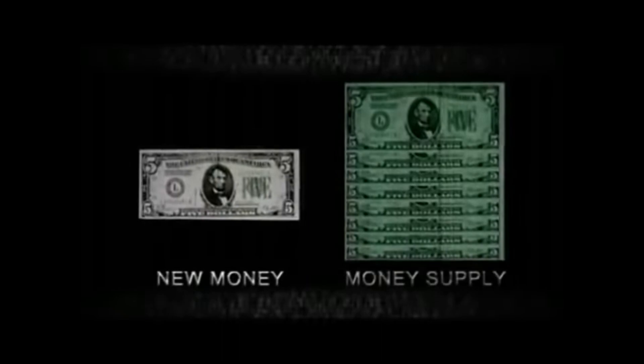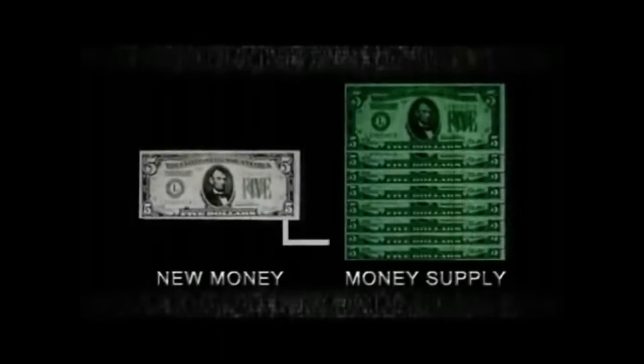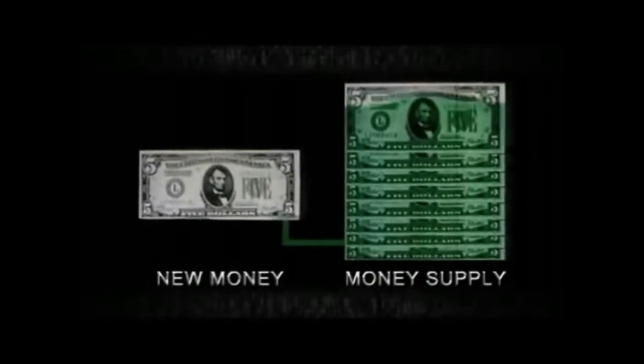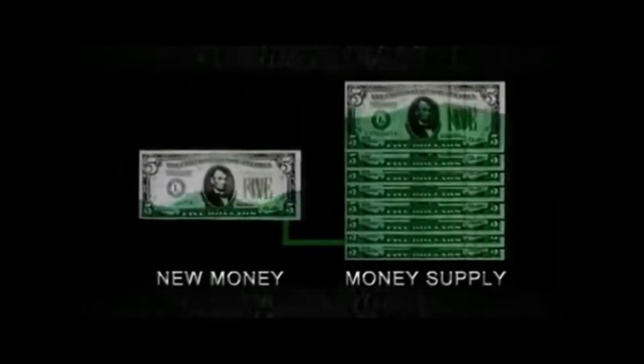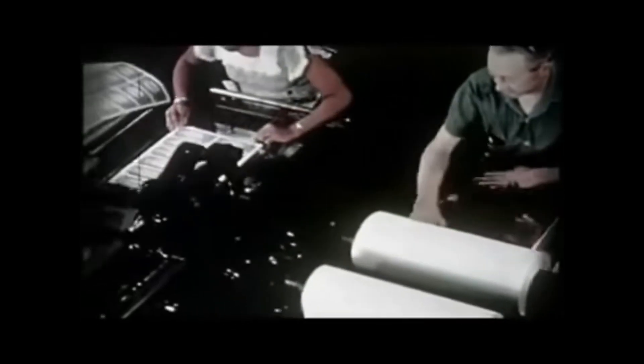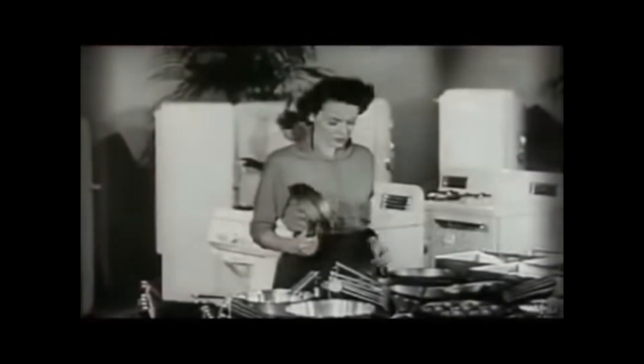So, now that we understand how money is created by this fractional reserve banking system, a logical yet elusive question might come to mind. What is actually giving this newly created money value? The answer? The money that already exists. The new money essentially steals value from the existing money supply, for the total pool of money is being increased irrespective of demand for goods and services. And as supply and demand finds equilibrium, prices rise, diminishing the purchasing power of each individual dollar.